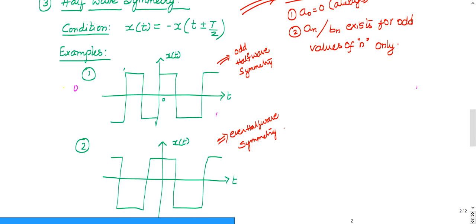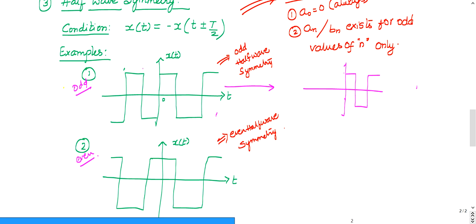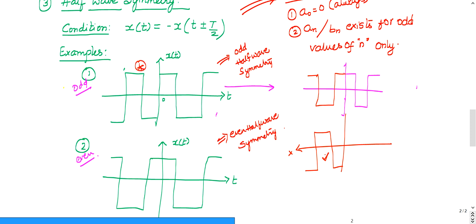Consider an odd signal — you can verify it. For identifying an odd function: take the right half, find its mirror image with respect to the y-axis, then find the mirror image of that with respect to the x-axis. If the result matches the left half of the original signal, then you can conclude it is an odd function.